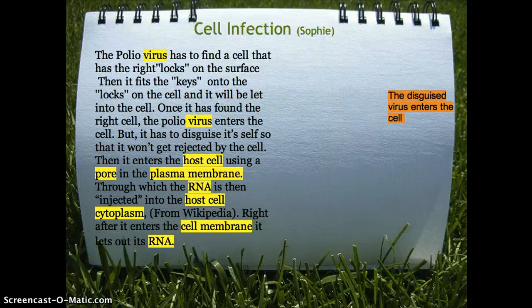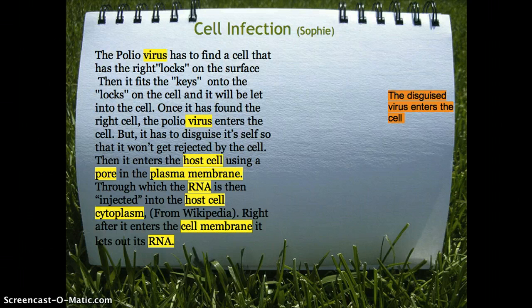First, the polio virus has to find a cell that has the right locks on the surface. Then it fits its keys onto the locks, and the cell will let it in. Once it has found the right cell, the polio virus enters the cell. But it has to disguise itself so that it won't get rejected by the cell.